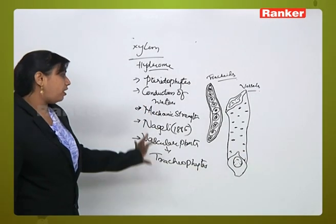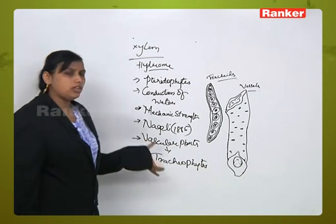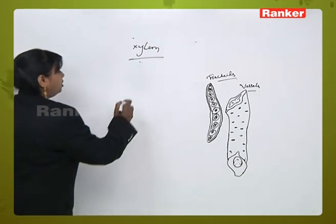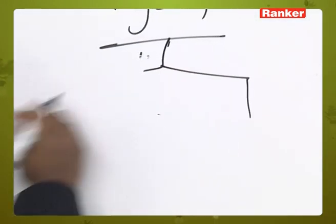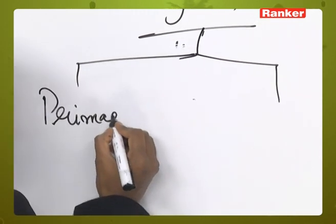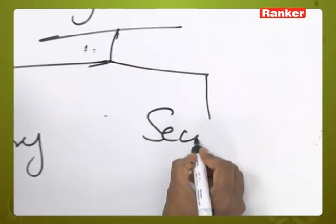Depending upon the origin of the xylem tissue, it is of two types: primary xylem and secondary xylem.